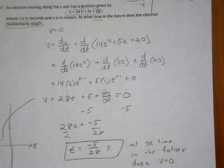Now that is the answer. At least two of you, I think, came up with this astute observation that I asked for what time in the future does the electron momentarily stop. The time here is negative. So the answer then is that at no time in the future does V equal 0. Because this happens in the past.